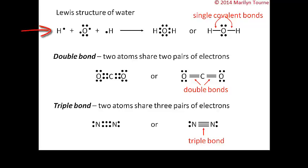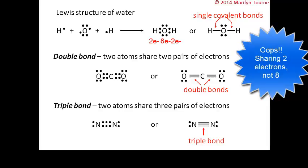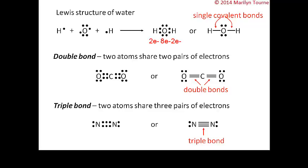Consider the Lewis structure of water. Hydrogen has one valence electron each, and oxygen has six valence electrons, so we expect oxygen to form two bonds to fill its octet. Oxygen shares two electrons with two hydrogen atoms, forming two covalent bonds — one with each hydrogen. Each hydrogen becomes full with two electrons, and oxygen has a complete octet sharing a total of eight electrons. This can be shown with dots or with lines, representing single covalent bonds.